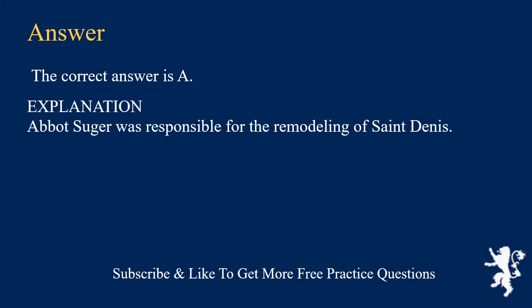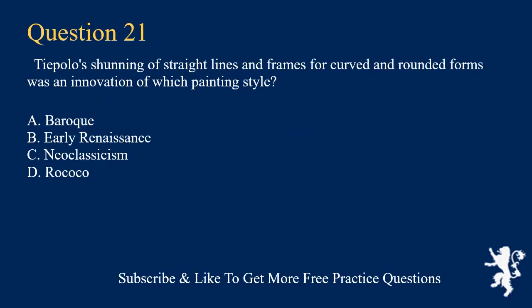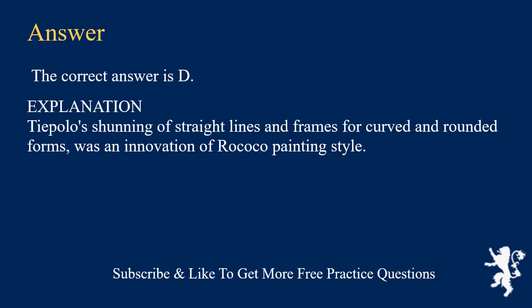Explanation: Abbot Suger was responsible for the remodeling of Saint-Denis. Tiepolo's shunning of straight lines and frames for curved and rounded forms was an innovation of which painting style? A. Baroque. B. Early Renaissance. C. Neoclassicism. D. Rococo. The correct answer is D.